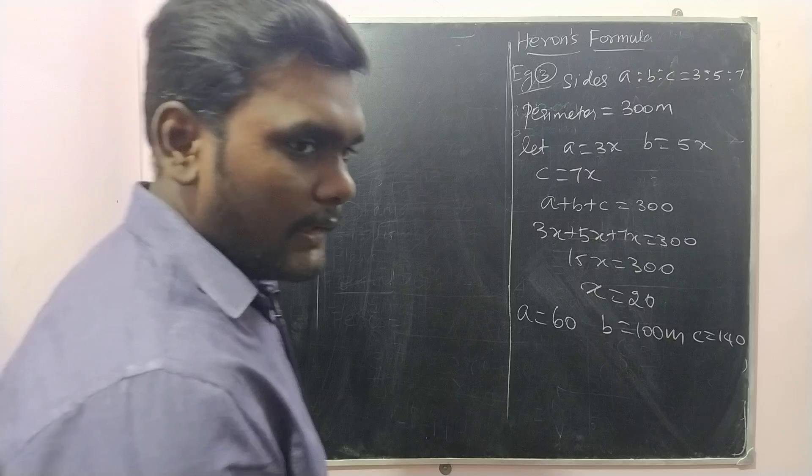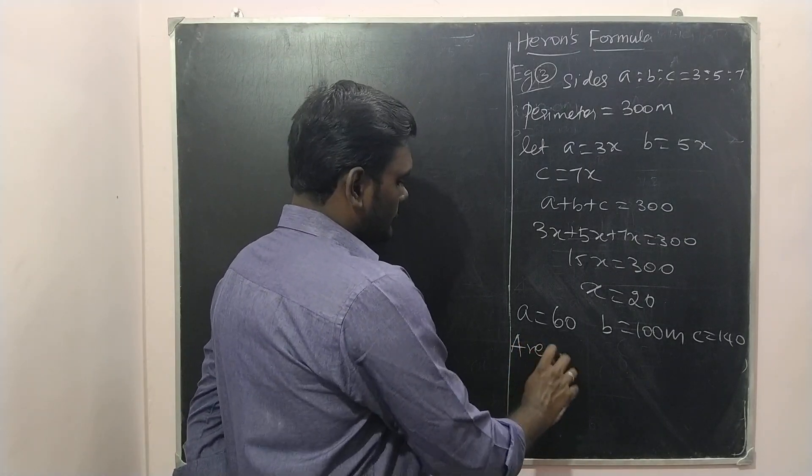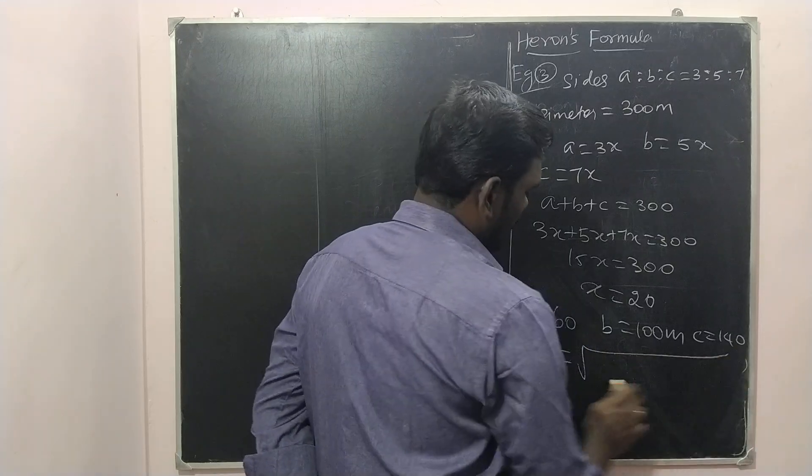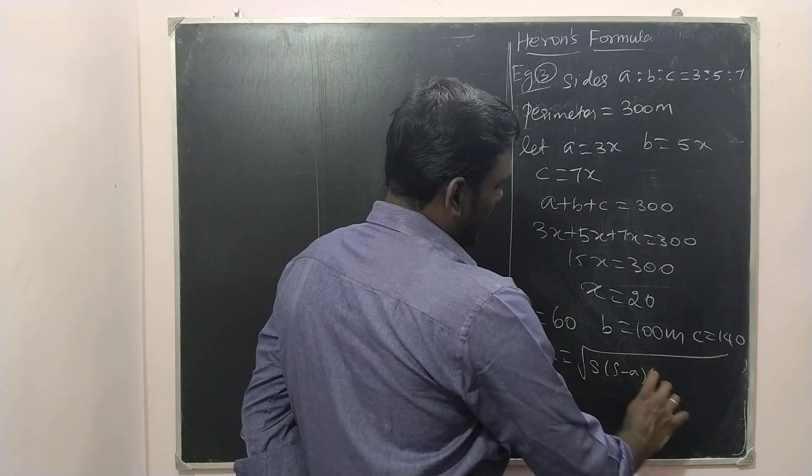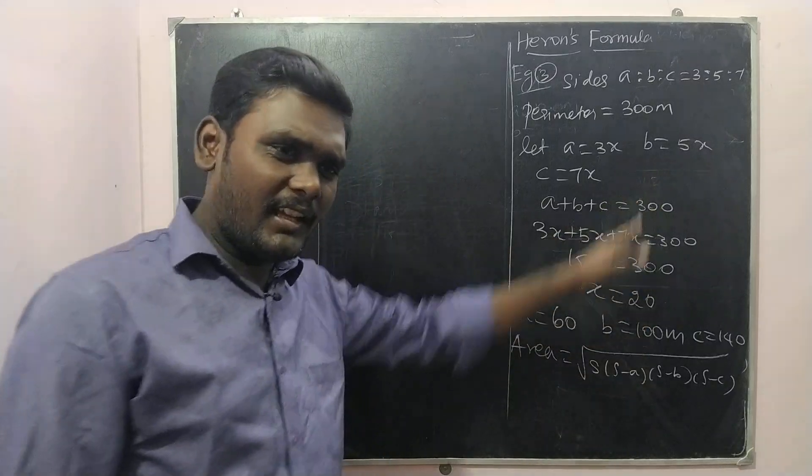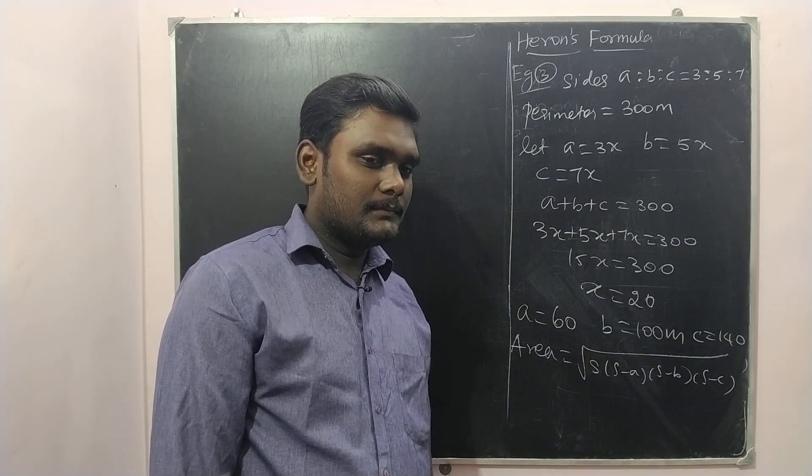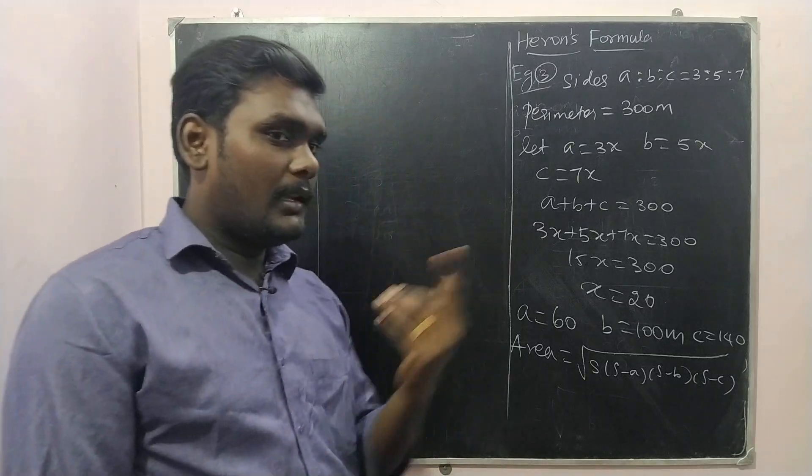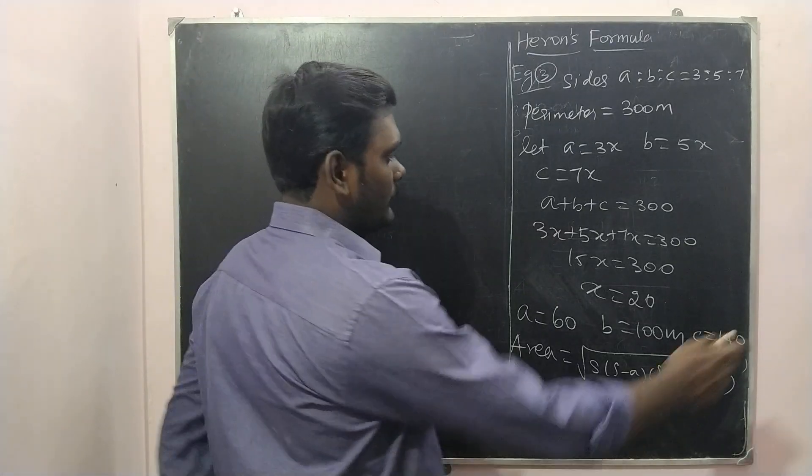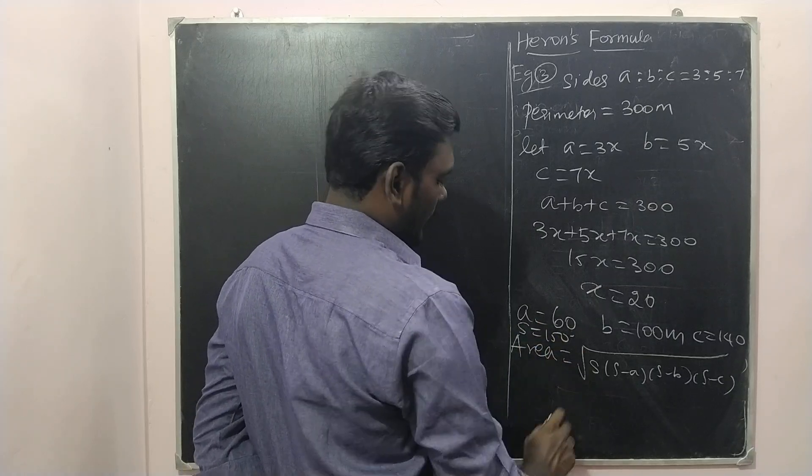Now we need to find the area of this triangle. How we can find the area? Square root of s into s minus a, s minus b into s minus c. s we already have 300, right? Is s equals 300? No, semi perimeter, half of it. So here s equals 150.